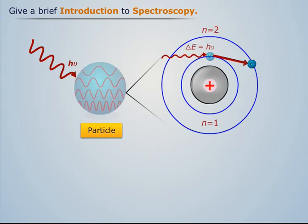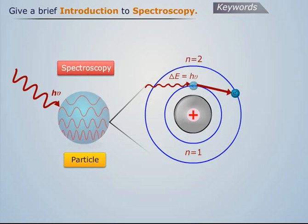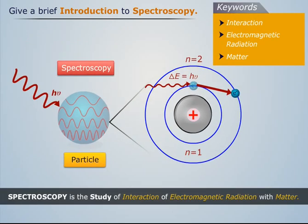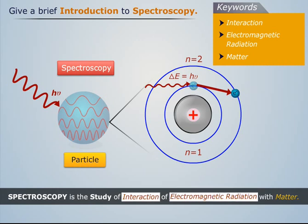The study of the effects of interaction between electromagnetic radiation and matter is called spectroscopy. Thus spectroscopy is the study of interaction of electromagnetic radiation with matter.